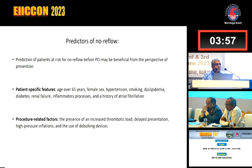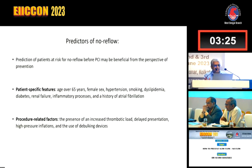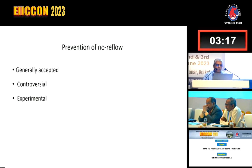It's important to know the predictors of no-reflow, because if you want to prevent it, you need to know the predictors and how to improve them. Predictors can be divided into two groups: patient-specific and procedure-related. Patient-specific features include age over 65, female sex, hypertension, smoking, dyslipidemia, diabetes, renal failure, rheumatoid arthritis or other inflammatory processes, and atrial fibrillation. Procedure-related factors include increased thrombotic load, delayed presentation, high-pressure inflations, and use of debulking devices.